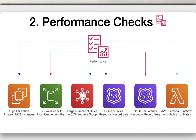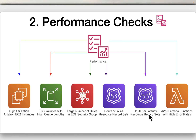Performance checks include high utilization Amazon EC2 instances, EBS volumes with high queue lengths, large number of rules in an EC2 security group, Route 53 alias resource record sets, Route 53 latency resource record sets, and AWS Lambda functions with high error rates.